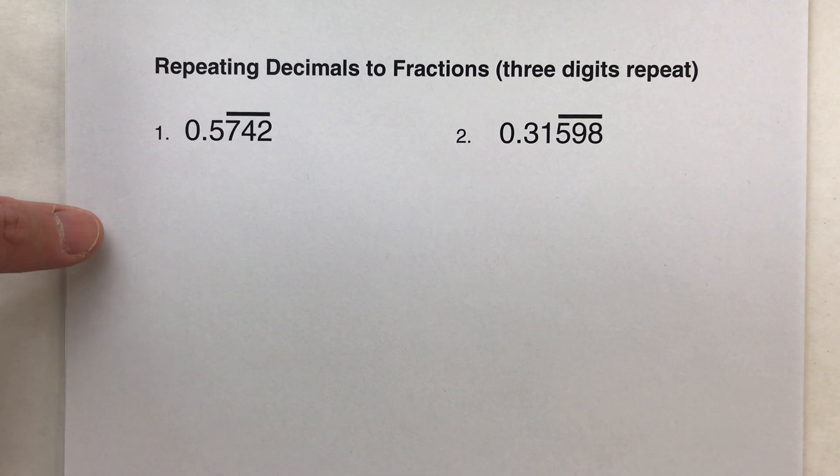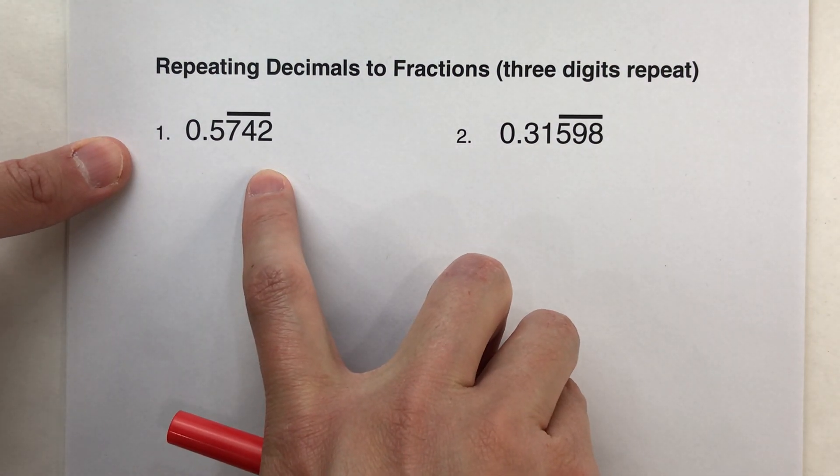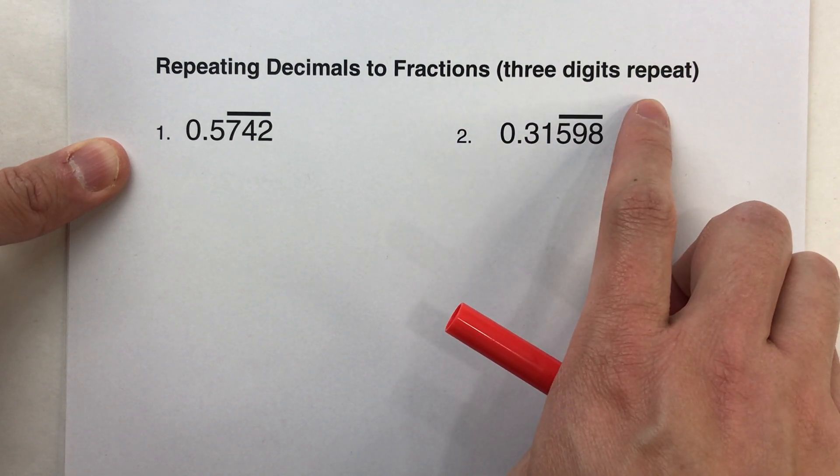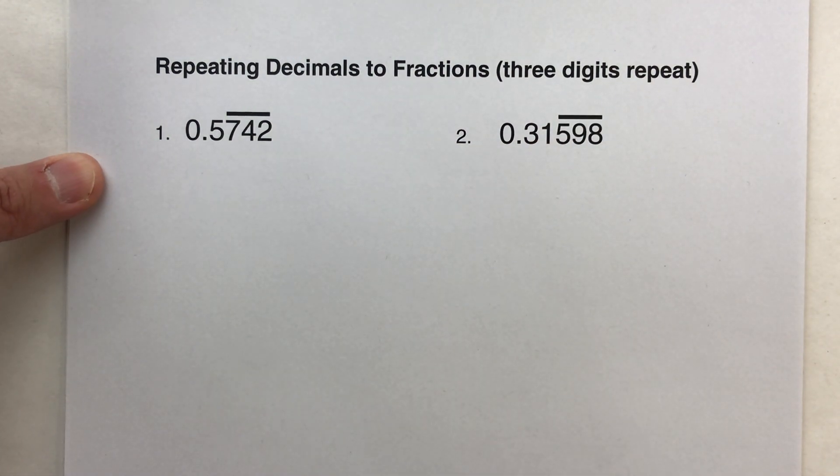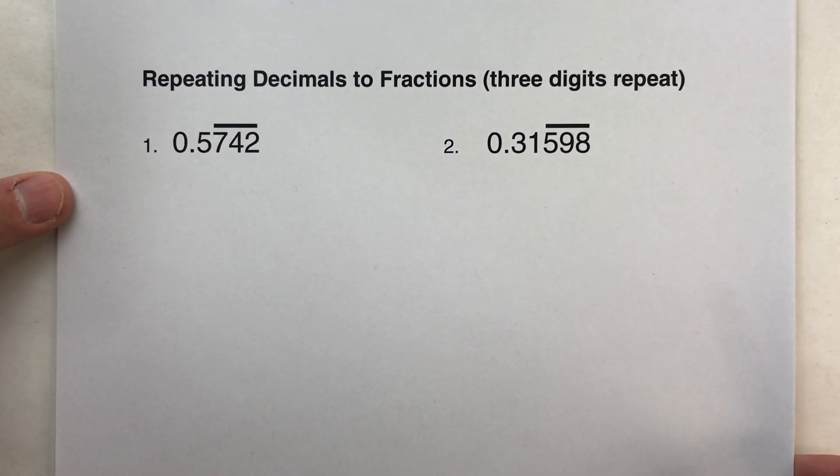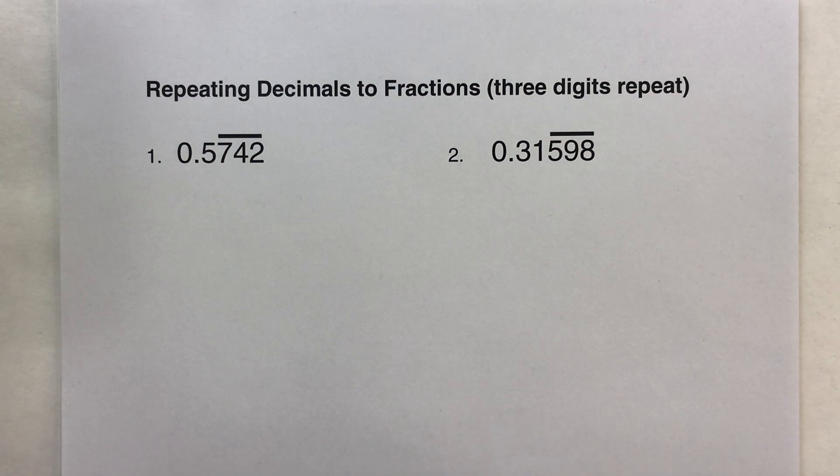So if you've seen my previous videos, I've shown you how to change repeating decimals to fractions when one digit repeats, with two digits repeating. And now we're doing three digits repeating, and the process is the same, with just one minor difference. And I will point out the difference when we get to it.